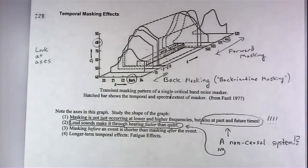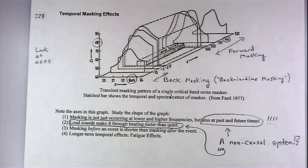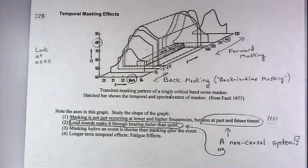Temporal masking really matters for audio and music encoding. If a violist comes in 15 milliseconds before a full orchestra hit, nobody will hear that viola. More importantly for compression: the goal is to keep only information people can actually hear. Drum beats make compression much easier — you don't need every detail of what happened quietly just before the beat because you can't hear it anyway.